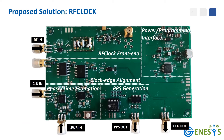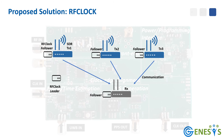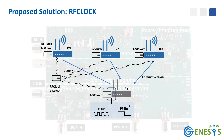To address these challenges, we propose RF Clock, an open-source physical layer solution. RF Clock can be integrated into software-defined radios as a standalone unit, and it provides 10 MHz and 1 PPS signals. RF Clock follows a leader-follower model, with the leader generating the reference clock that is distributed to all followers.